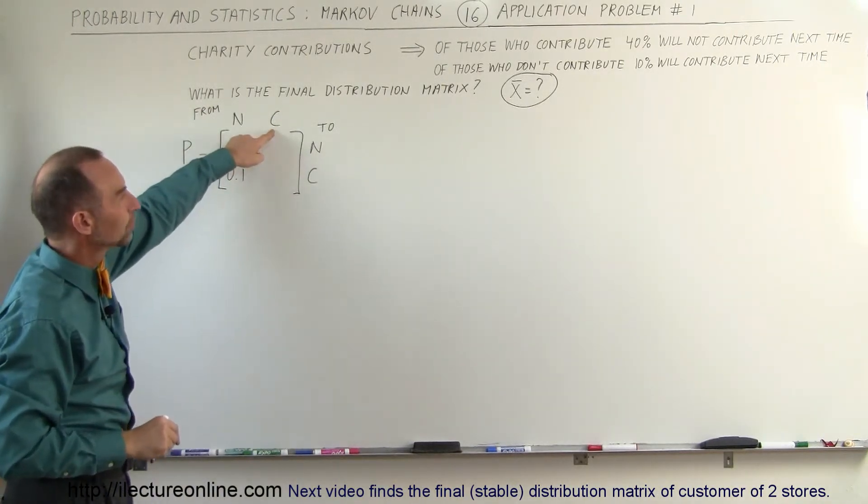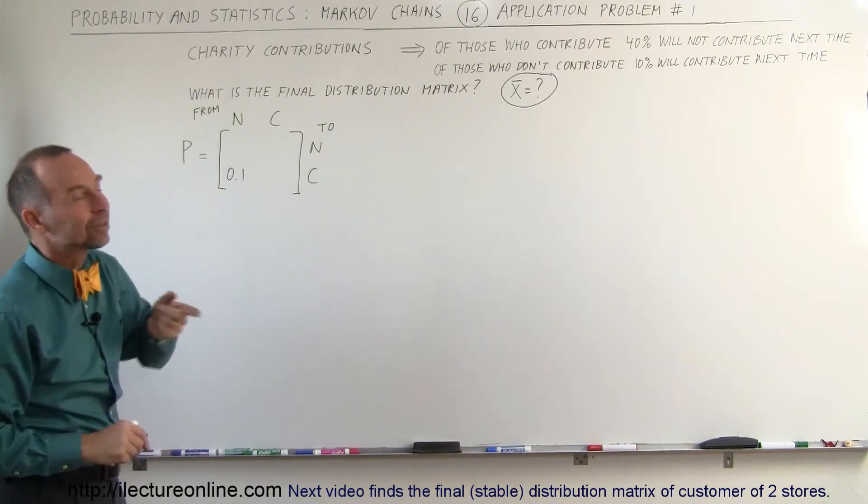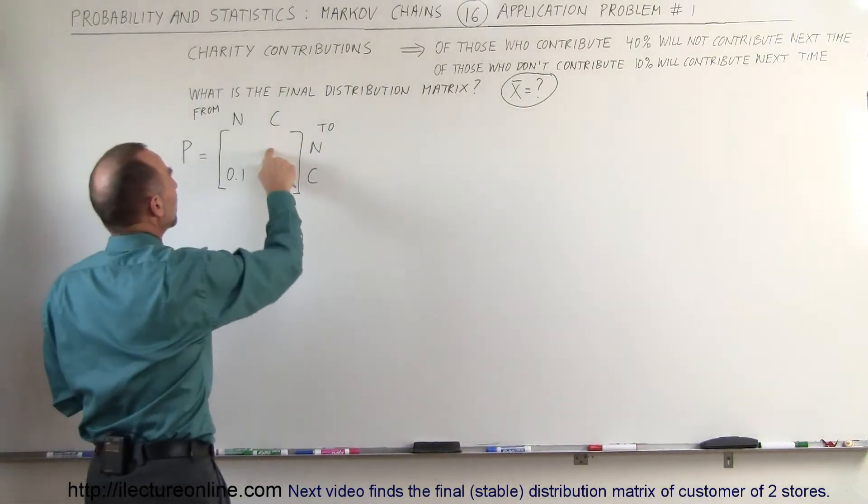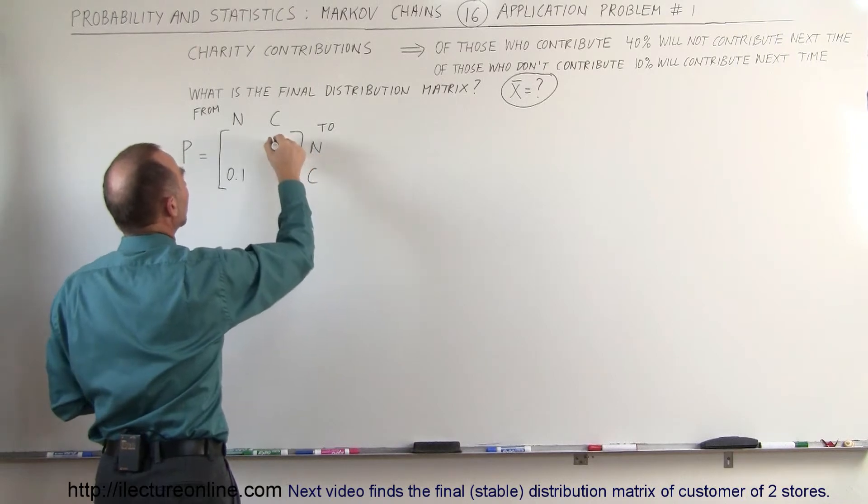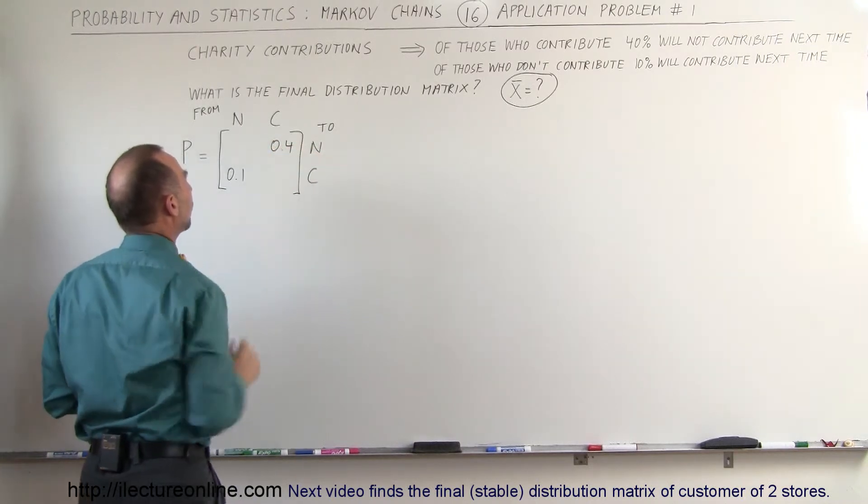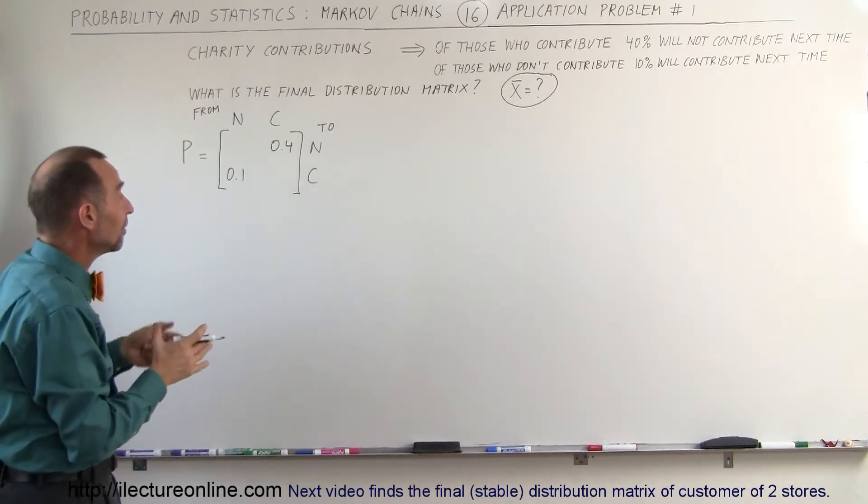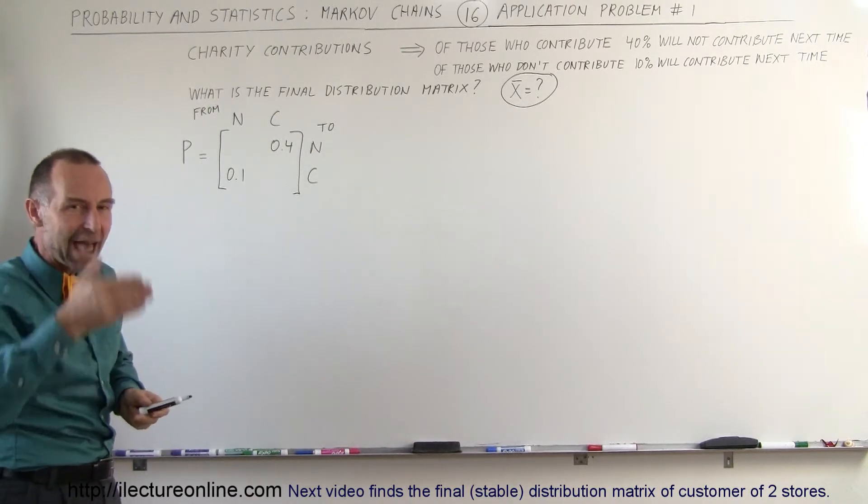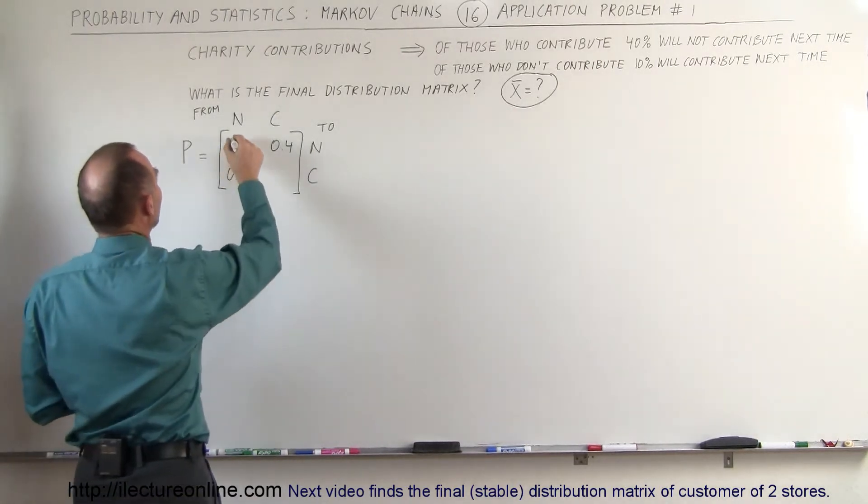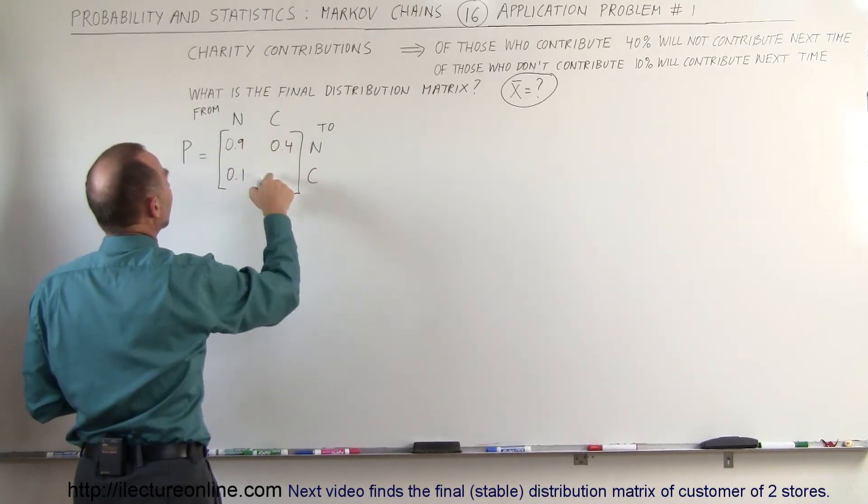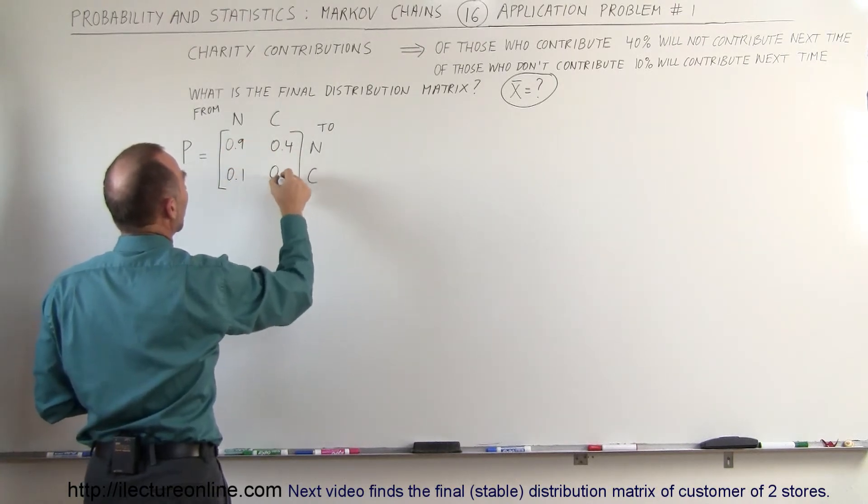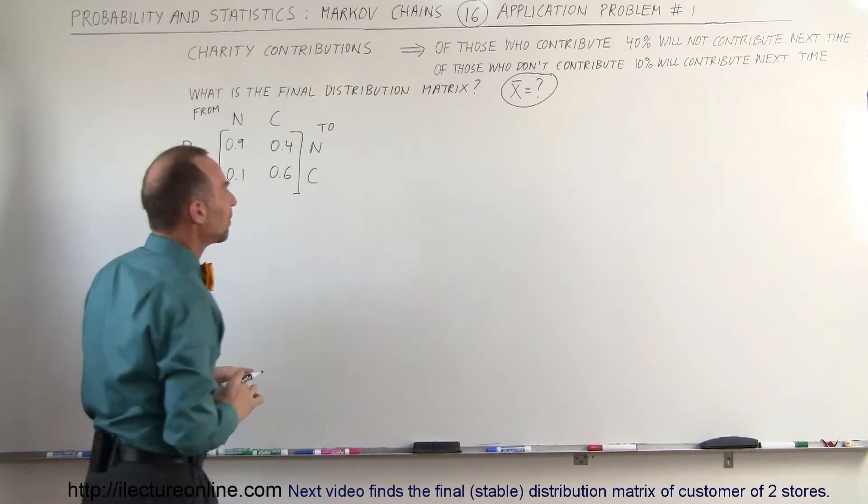For those who contribute, what percentage will not contribute next time? So for contributing to not contributing, that one is 40% or 0.4. So those are the two things that were given to us. Now we can fill in the rest of the matrix because we know that the columns have to add up to one. So that means that this needs to be 0.9, and this needs to be 0.6. So now we have the probability matrix.